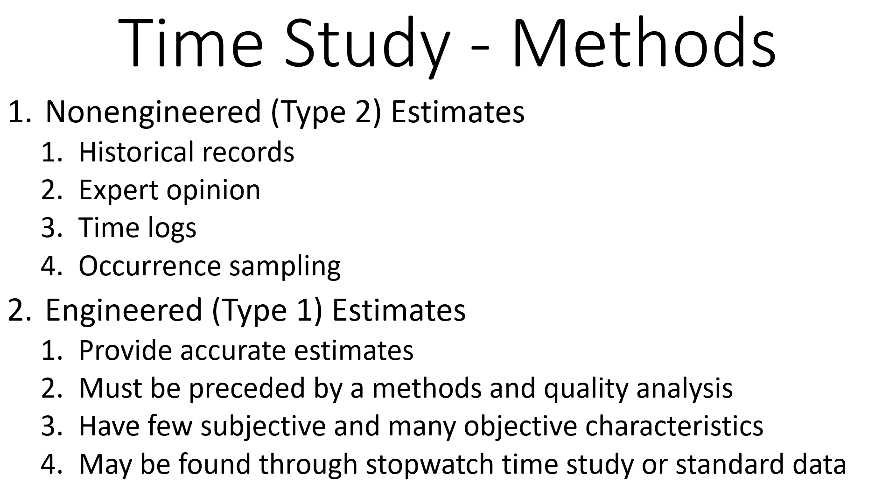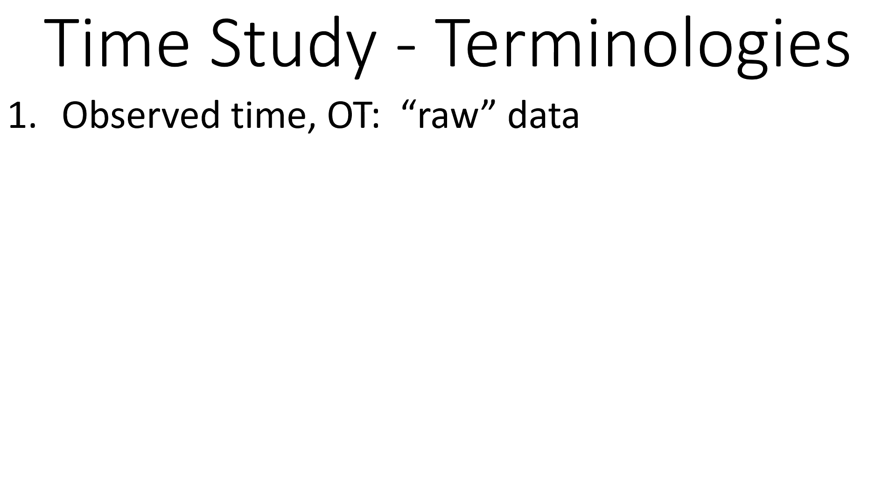The engineered method requires training and some effort to do it correctly. We'll learn all that in this video series. First, some definitions: observed time - as you go observe the work. For example, let's say it takes 20 minutes to do the mold change. However, when you are observing, the process might be a little bit slower or faster, so we have to adjust it for the speed rating.